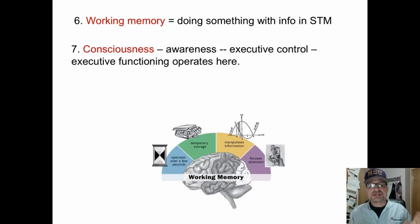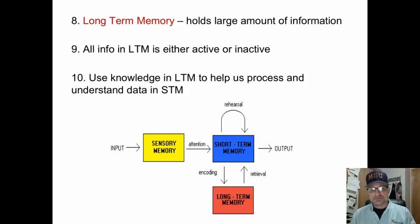Long-term memory holds an almost unlimited amount of information. All information in long-term memory is either active, meaning you can access it, or inactive. It's there, but you are not able to retrieve it or remember it.